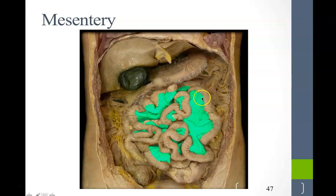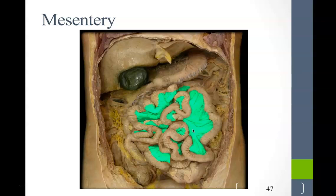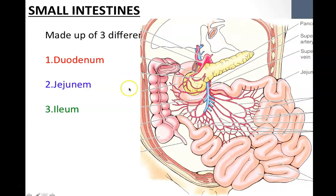Another structure to point out on the small intestines is the mesentery — the portion in green that almost looks like fat. The mesentery is formed by your parietal and visceral peritoneum and contains arteries, veins, and lymphatic vessels. Most of the mesentery has been dissected away in the cadaver, but we can still see vasculature coursing to the intestines.